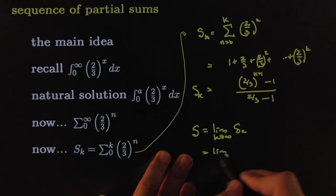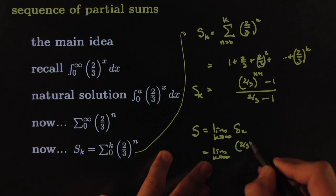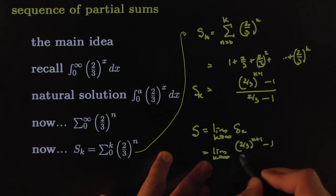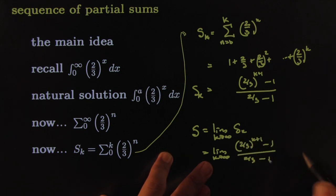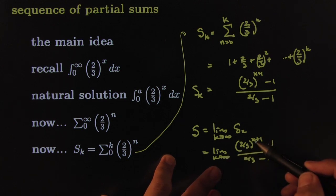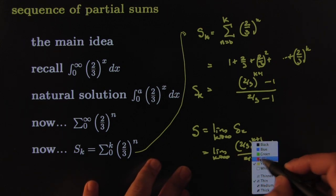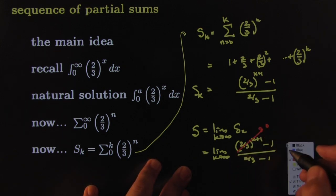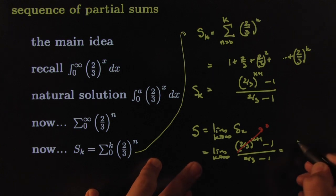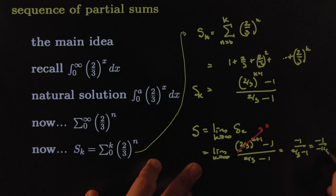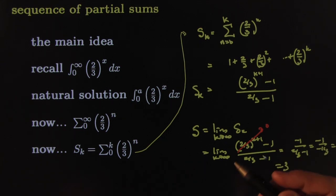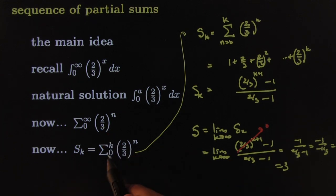Now the actual sum is the limit as k goes to infinity of the partial sums: the limit of ((2/3)^(k+1) - 1) / (2/3 - 1). Clearly (2/3)^(k+1) goes to zero for large k, leaving us with -1 / (2/3 - 1) = -1 / (-1/3) = 3. We computed the actual infinite sum using partial sums.